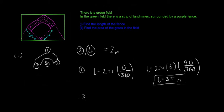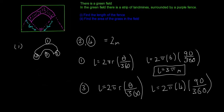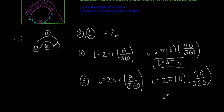For side 3, I'll do the exact same thing: L = 2πr × θ/360. In this case, the radius is 4 metres for the shorter arc. So L = 2π × 4 × 90/360, which gives us L = 2π metres.